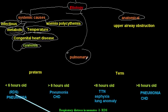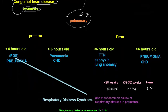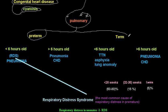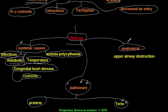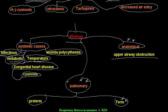The second big category is pulmonary causes, which is the focus of this video. Pulmonary causes are categorized into preterm causes and term causes, because preterm neonates have distinct diseases causing respiratory distress, and term neonates have their own particular diseases. The third category is anatomical defects — upper airway obstruction due to congenital malformations or anomalies.